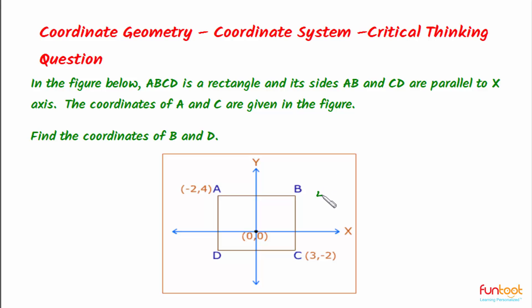So here we can write 4 for Y coordinate. And if we look at BC parallel to Y axis along BC, we can see that Y coordinate keeps on changing but the X coordinate remains constant. So for point B, the X coordinate will be 3. So 3, 4 are the coordinates of point B.